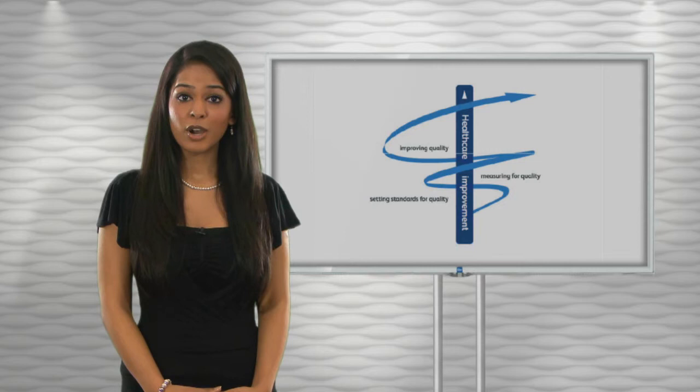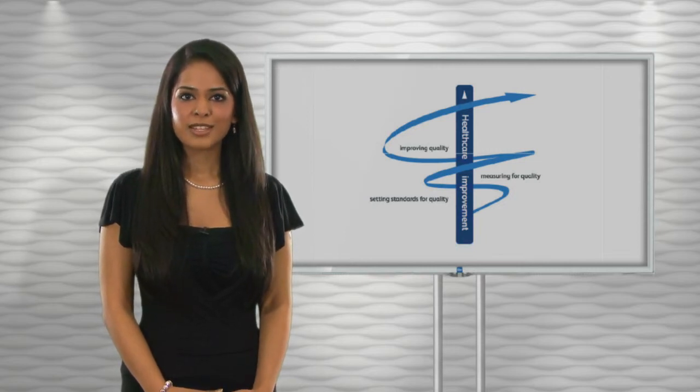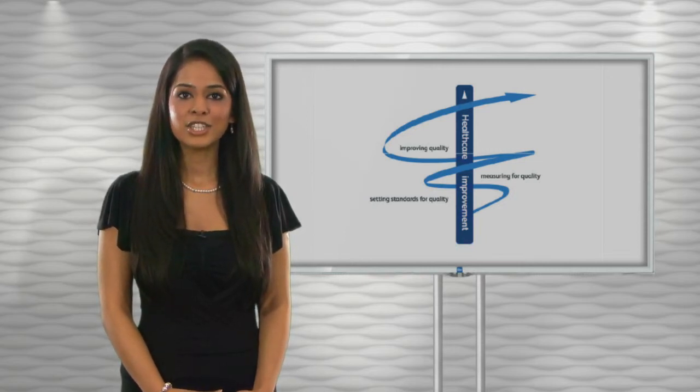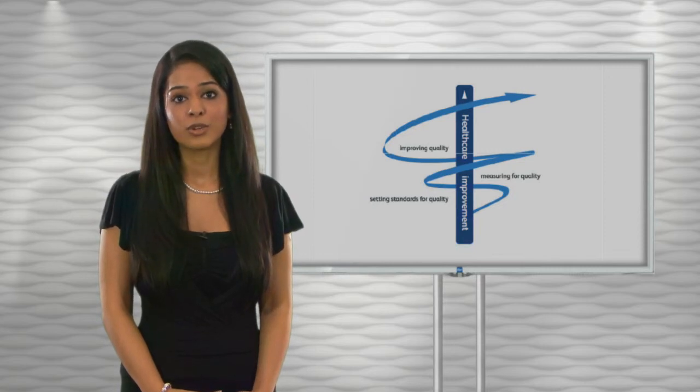It's often called an audit spiral rather than a cycle. The spiral suggests that as the process continues, each cycle aspires to a higher level of quality.